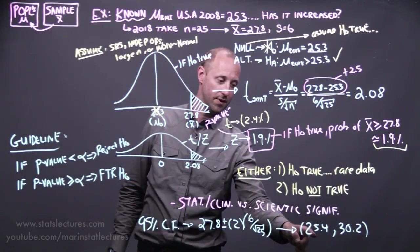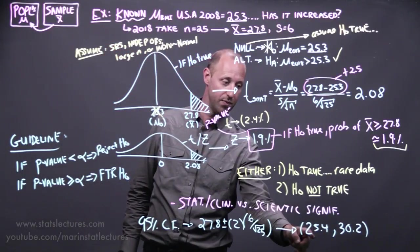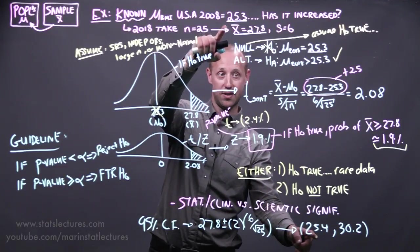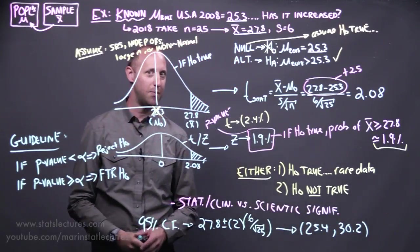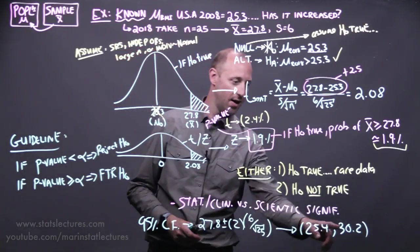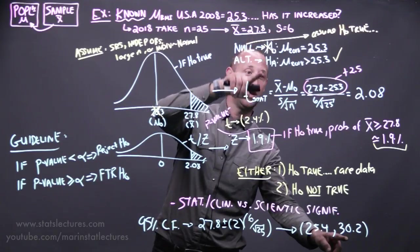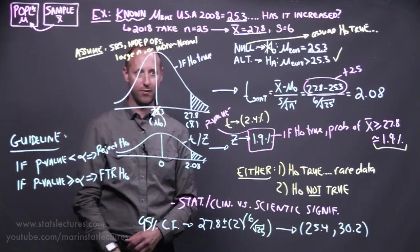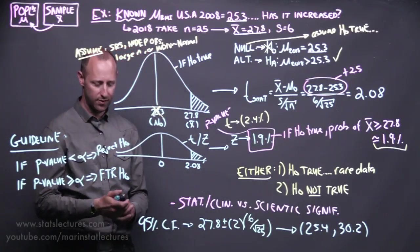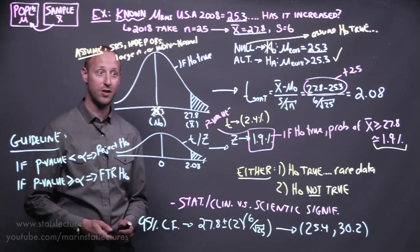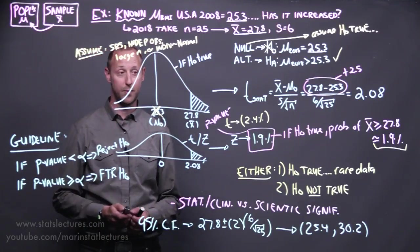And we can look at the confidence interval to decide is it a meaningful increase. At the lower end, the lowest value we're willing to accept, 25.4, that's only 0.1 above the mean in 2008. So at that end, it might not be a meaningful, clinically meaningful increase. At the higher end, the 30.2, that's 4.9 above the mean in 2008. That might be clinically meaningful. Okay, so just a reminder that statistical significance and scientific or clinical significance are two different things.